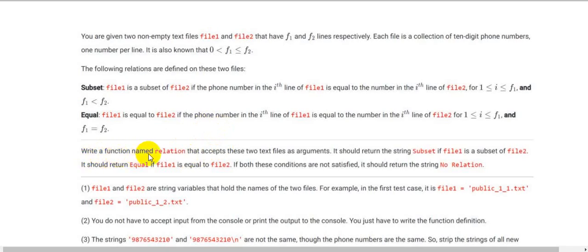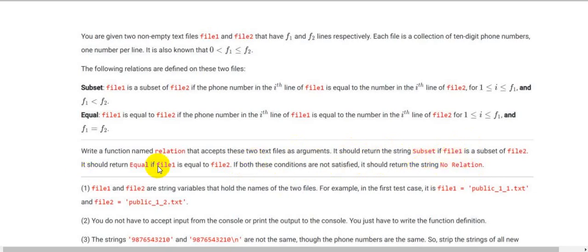Write a function named relation that accepts these two text files as arguments. It should return the string 'subset' if file1 is a subset of file2, return 'equal' if file1 is equal to file2, and if both conditions are not satisfied, return the string 'no relation'. So there are three possible return values: subset, equal, or no relation.